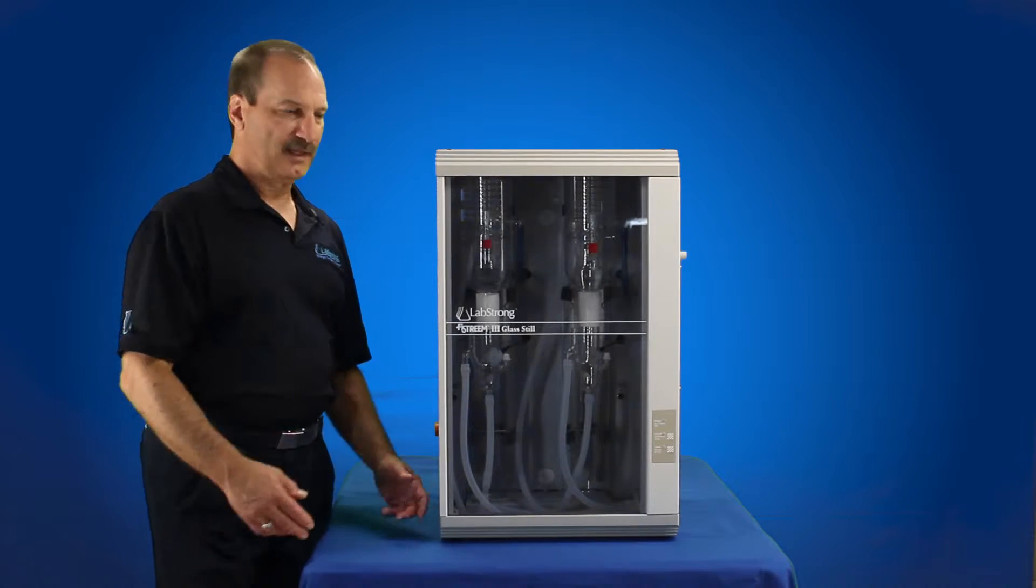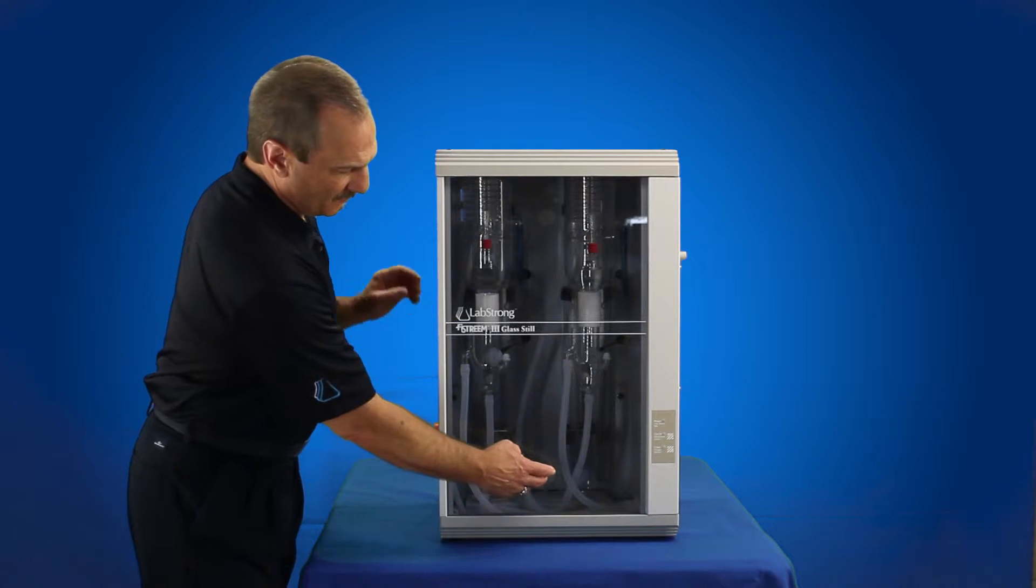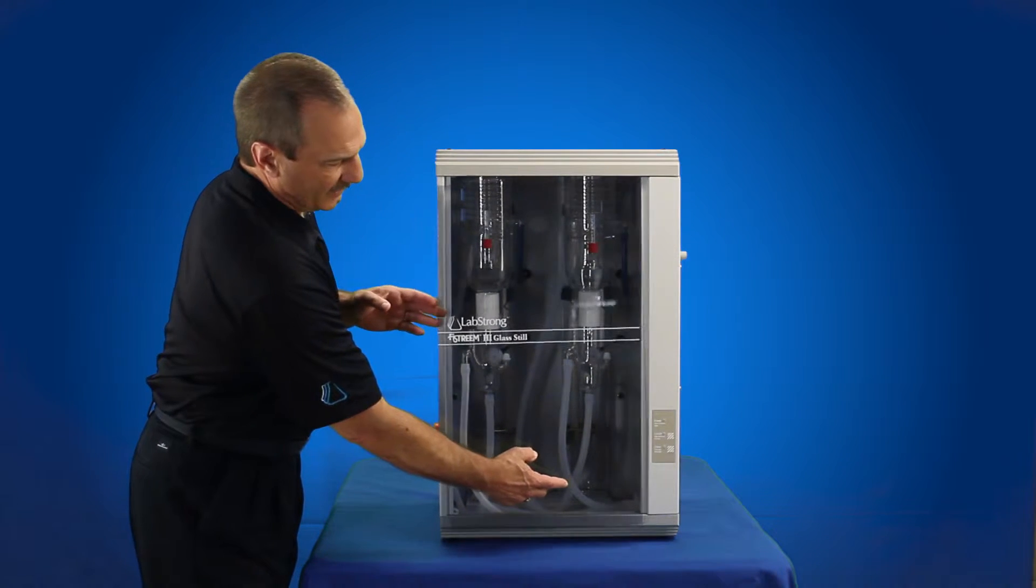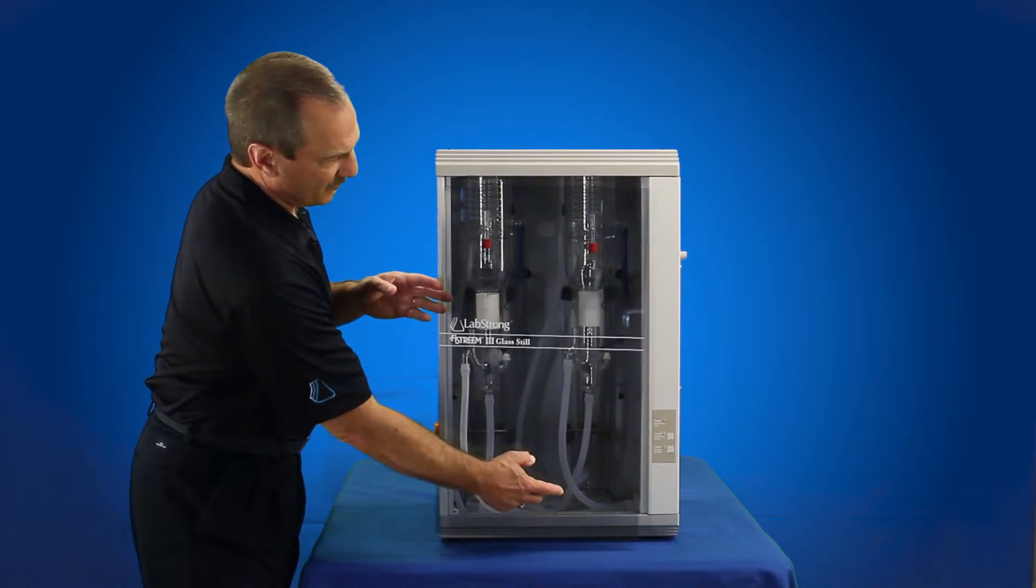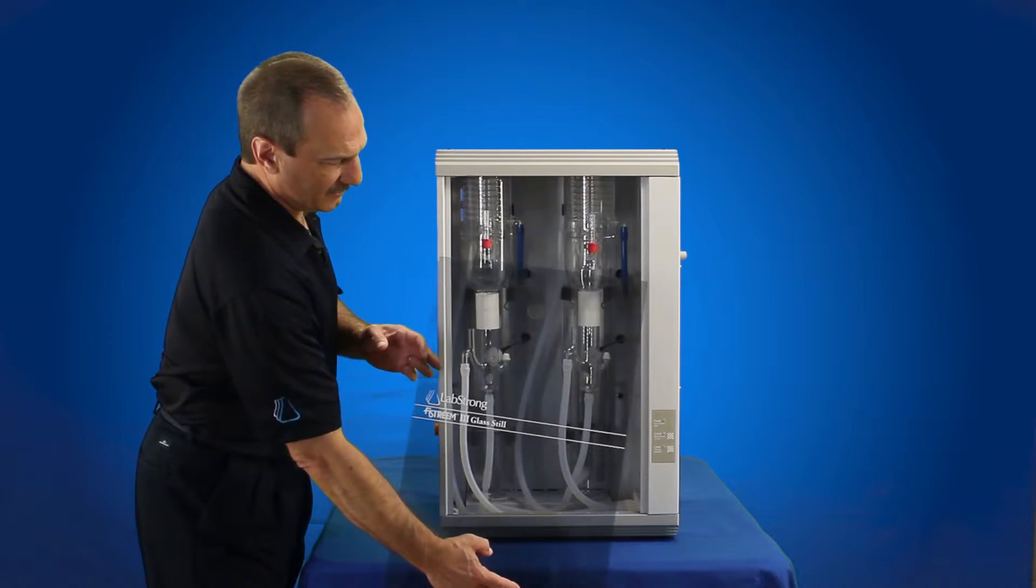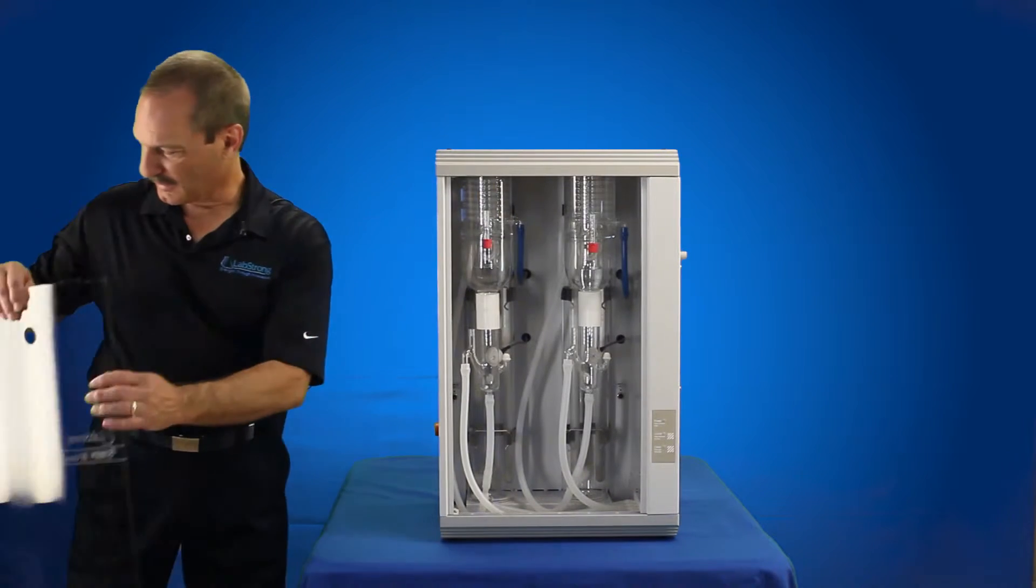Now we're going to remove the door from the 8 liter per hour Fikestream 3 system. The Fikestream 3, 4 liter per hour system single distilled has the same type of door, it's just a little smaller. You're basically going to lift up, pull out on the bottom, pull the top down, and remove the door. Set that aside.